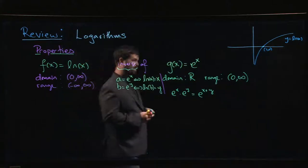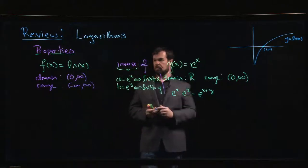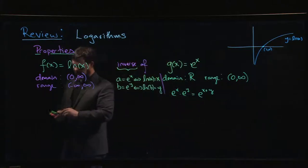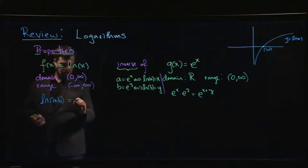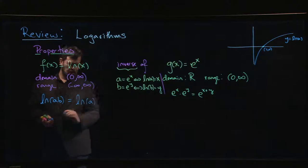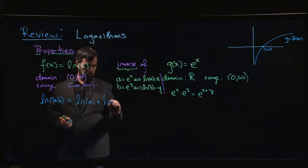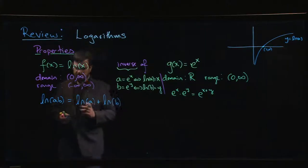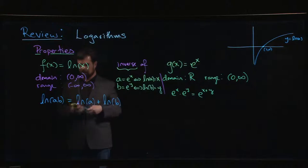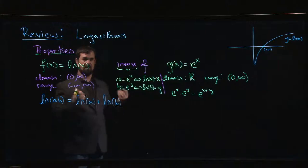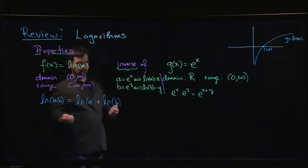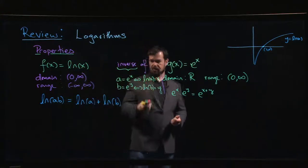Another reason people like logarithms is they tend to take complicated arithmetic operations and turn them into simpler ones. One of the properties of the natural log is that the natural log of a times b equals the natural log of a plus the natural log of b. So if you've got a collection of numbers and you've taken the natural log of all of them, multiplication becomes addition, which is simpler and easier to work with.